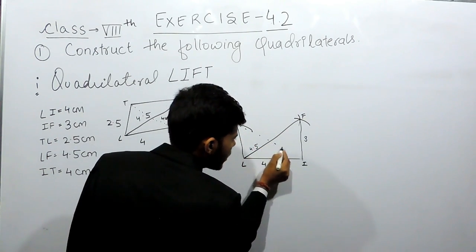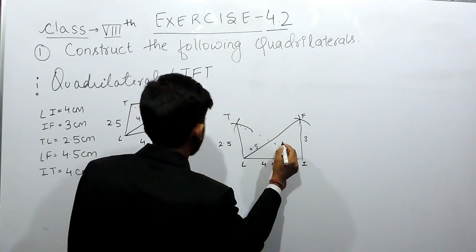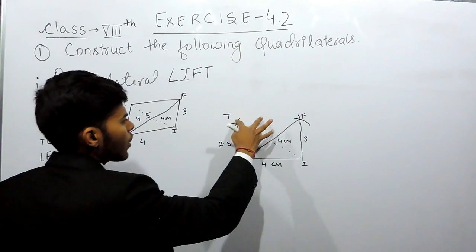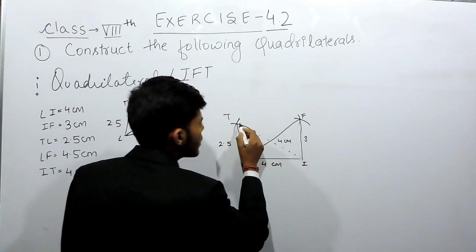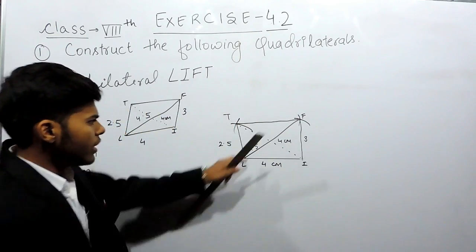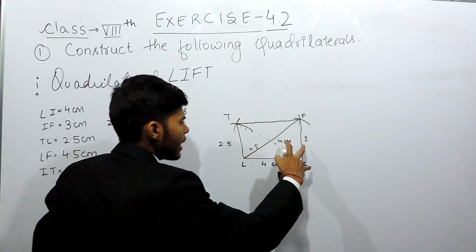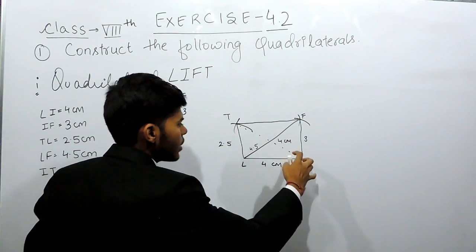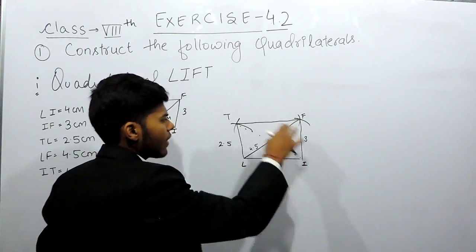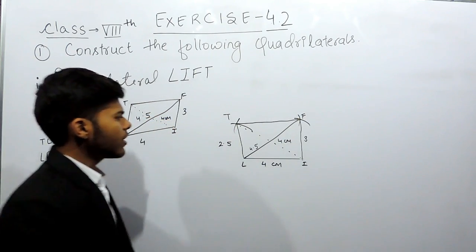This dotted diagonal will be 4 cm and we will join T and F. We made an arc of 4 cm from point I. From this point we made an arc of 4.5 cm and this is how you will construct the given quadrilateral.